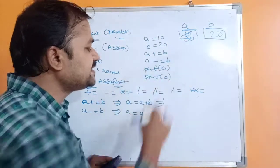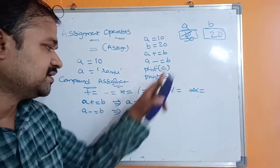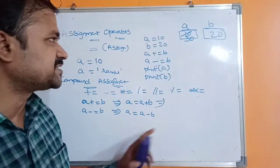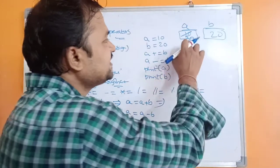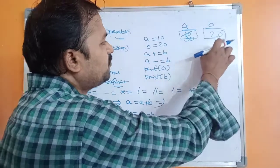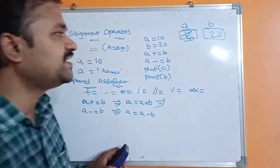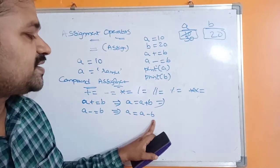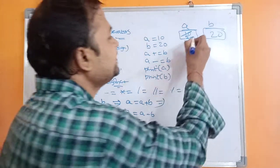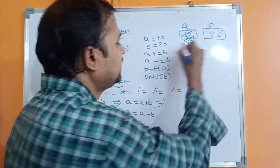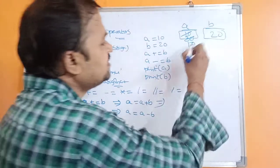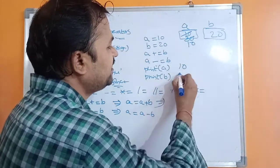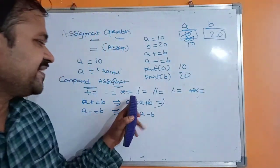The next statement is a -= b, which is equivalent to a = a - b. The current value of a is 30 and b is 20, so 30 - 20 = 10. That 10 will be stored in a. When we print a, 10 gets printed, and b prints 20.